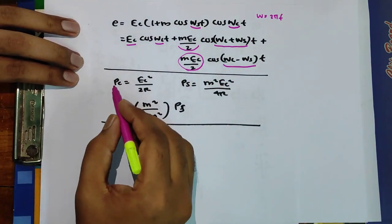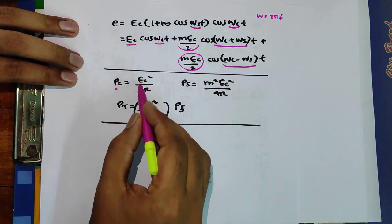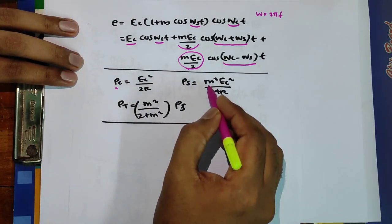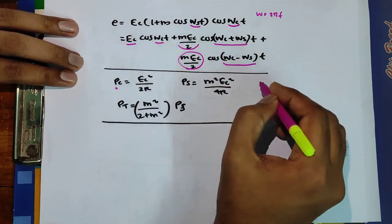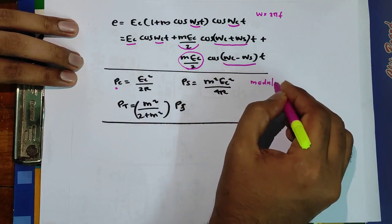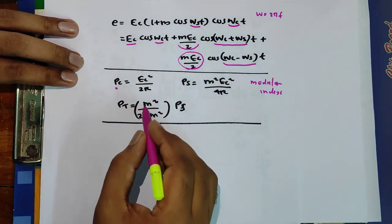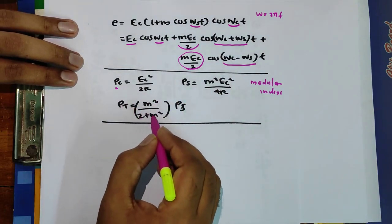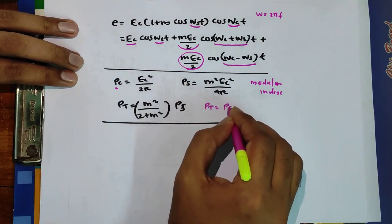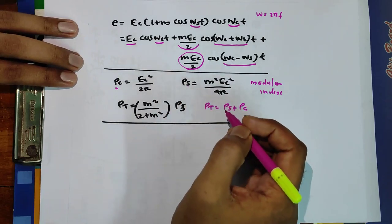We have shown that the power of the carrier wave is equal to Ec²/2R, and the power of the sideband signal is m²Ec²/4R, where m represents the modulation index. Also, P_total = (m²/2 + m²)·P_carrier, and P_total = P_sideband + P_carrier.